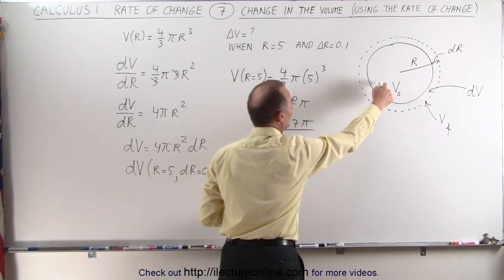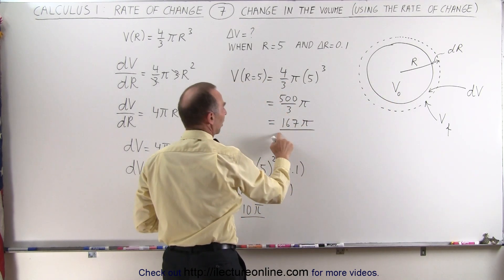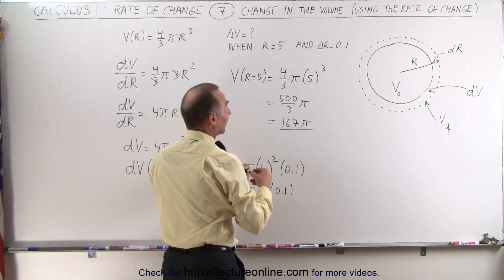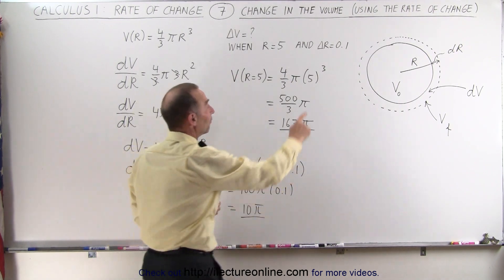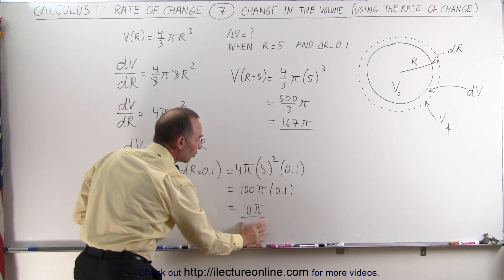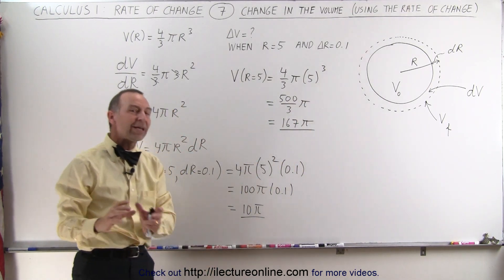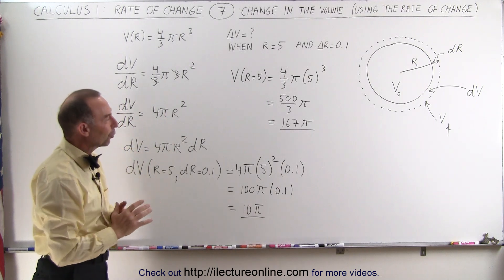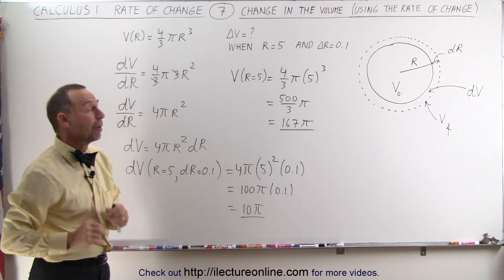So we can see that our original volume is 167π, and then if we change the radius from 5 to 5.1, the volume will increase by an additional 10π. Is it going to be exactly 10π? No, of course not. But it's a very good approximation.